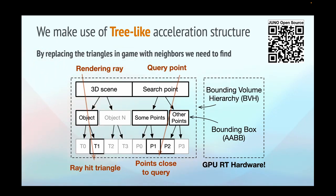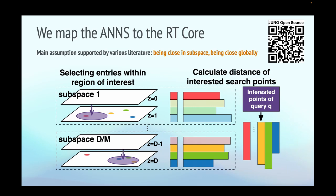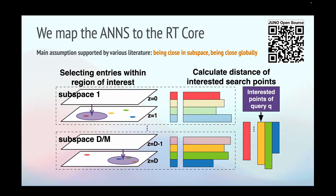We can easily replace the entities in the original ray-tracing pipeline with query and search points in nearest neighbor search. Intuitively, we launch rays from queries and place hittable spheres at the search points. Once they intersect, we know that they are close. We find close search point projections in all subspaces and get the real close neighbor globally.